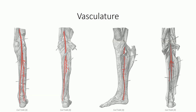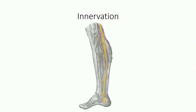The tibial nerve travels with the posterior tibial artery, providing motor branches to all muscles in the posterior compartment. Superiorly, the motor branches to the superficial group supply the gastrocnemius, soleus, and plantaris. After passing into the soleal arch, the tibial nerve gives off branches to the deep group of muscles — tibialis posterior, flexor digitorum longus, and flexor hallucis longus. The tibial nerve then continues into the foot and will be revisited in our final lecture of the unit.